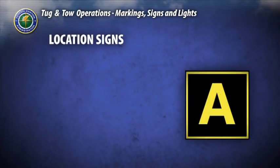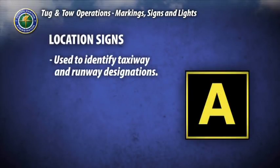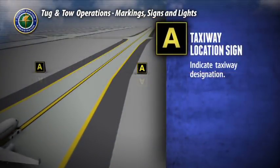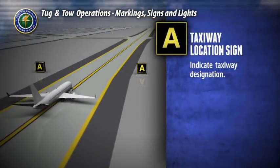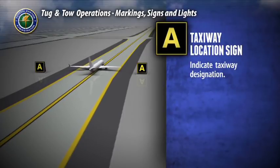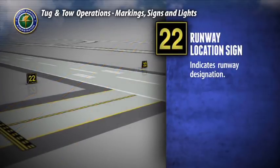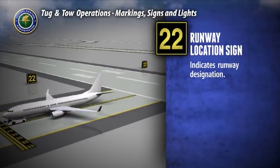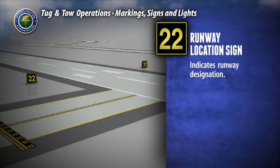Location signs are used to identify the taxiway or runway upon which the aircraft is located. These signs incorporate yellow inscriptions on black backgrounds with yellow borders. The taxiway location sign indicates the designation of the taxiway on which you are located, and these lettered signs will be located along the sides of taxiways. The runway location sign indicates the designation of a runway and is installed on runways where the proximity of two runways could create confusion.